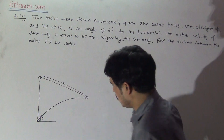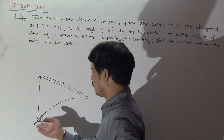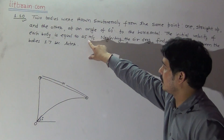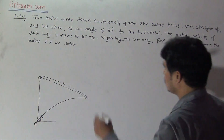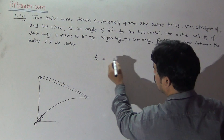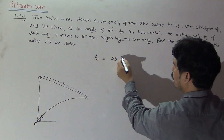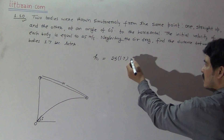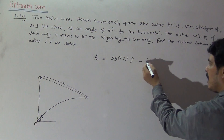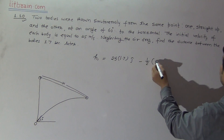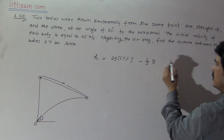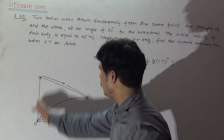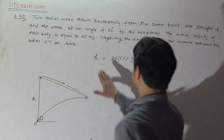Let this be the starting point from where the bodies were thrown. For the body moving vertically upward, velocity is 25 meters per second. The distance covered by this body in 1.7 seconds is given by the formula: h1 = ut − (1/2)g·t². The direction is j (upward), and gravity acts in the negative j direction. So height h1 in vectorial form involves u in the j direction minus (1/2)g·t² in the j direction.